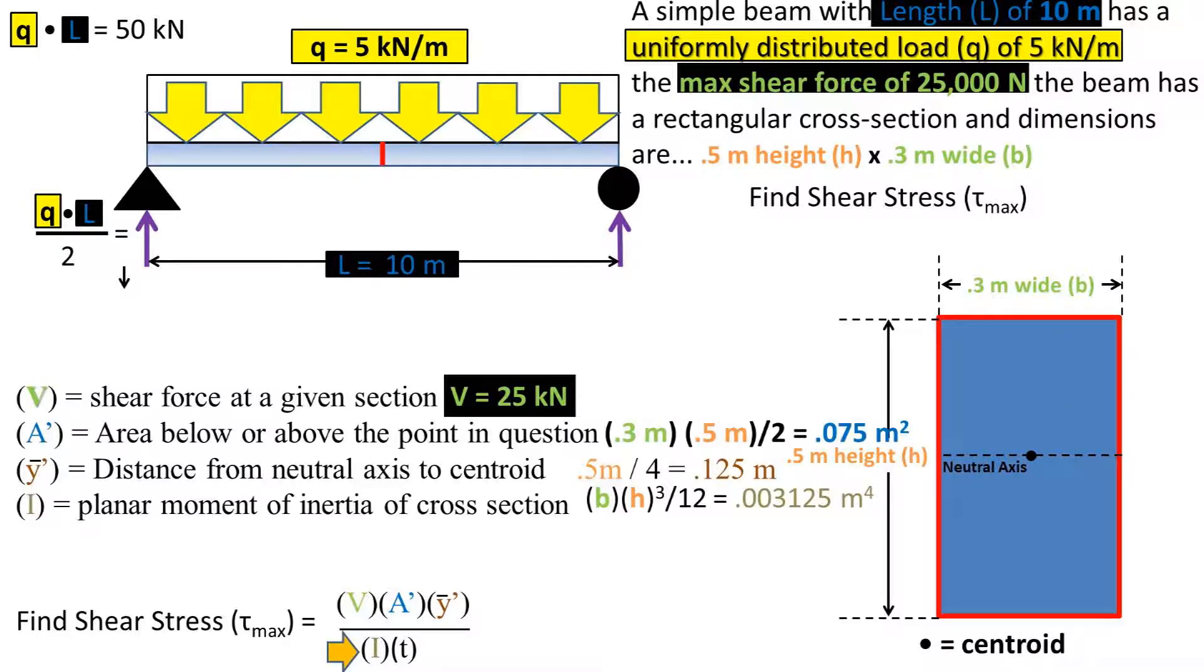The planar moment of inertia can be found using calculus or by using a table. In this case, which is a rectangle, the planar moment of inertia is the base times the height to the third power over 12.